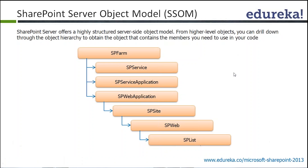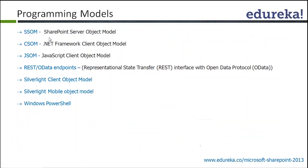Once you learn this object model, the programming technologies you can use are SSOM, CSOM, JSOM. You can use Java, .NET, or an open standard like REST — any programming language that supports REST. It fully supports the Silverlight model for mobile and client. When you say client object model, whatever code you write is passed to the server, which converts it to server code and executes it — so almost all server-side capabilities are available. Your learning curve is minimized: if your background is .NET or Java, it's a straight line into SharePoint development.